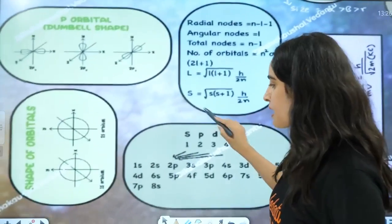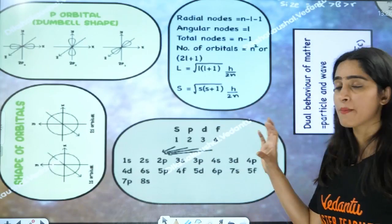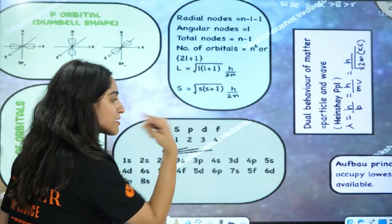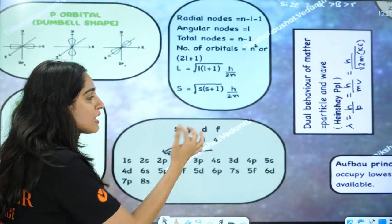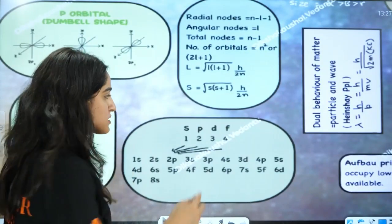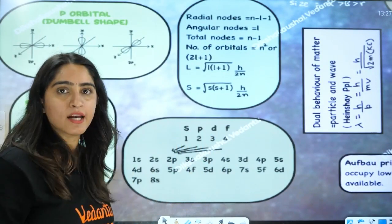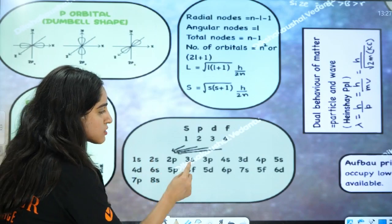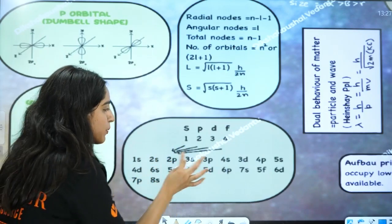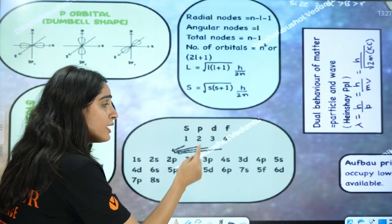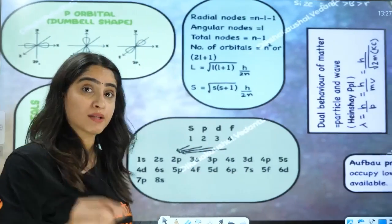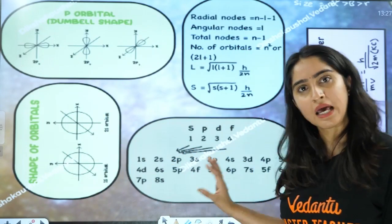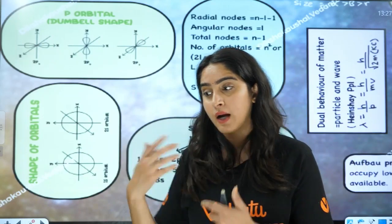Next, we have the shapes of orbitals and the energy order. Here is a simple trick: write SS, then PSPS two times, then DPSDPS two times, then FDPSFDPS two times. Then fill in the numbers — S starts from 1 (1S, 2S, 3S, 4S), P starts from 2 (2P, 3P), D starts from 3 (3D, 4D, 5D, 6D, 7D), F starts from 4 (4F, 5F, 6F, 7F). This gives the increasing order of energy, making electronic configuration very easy.